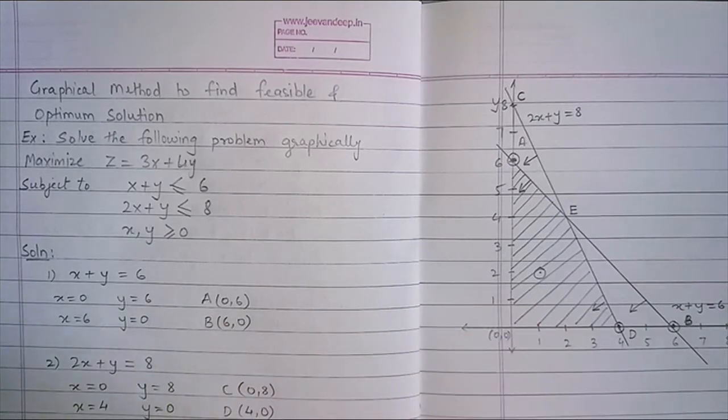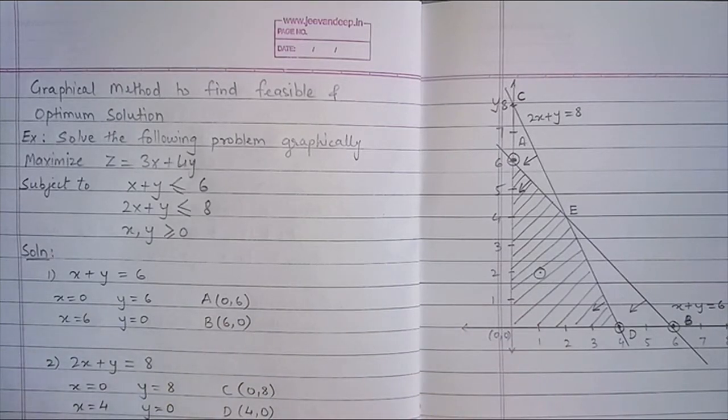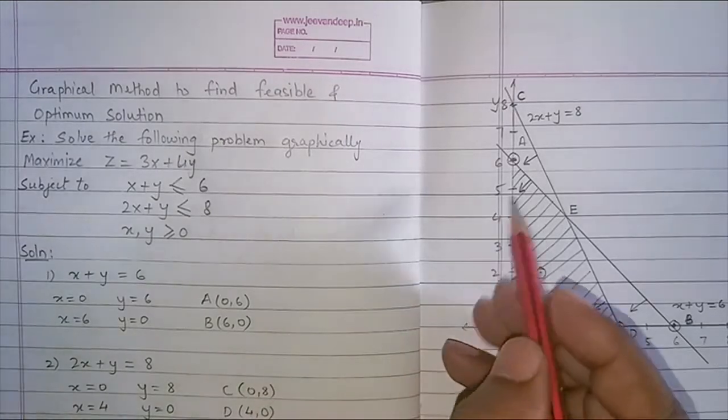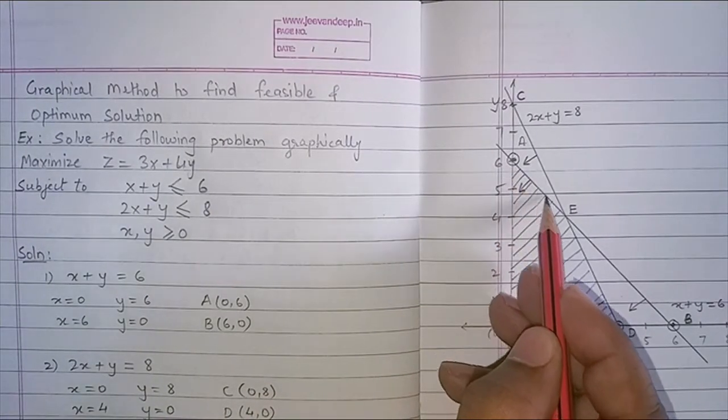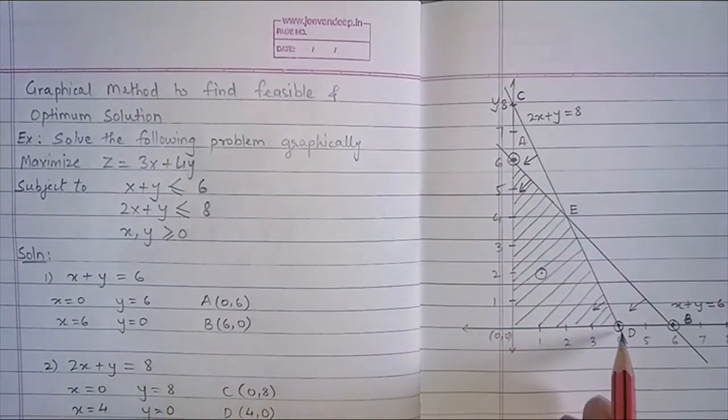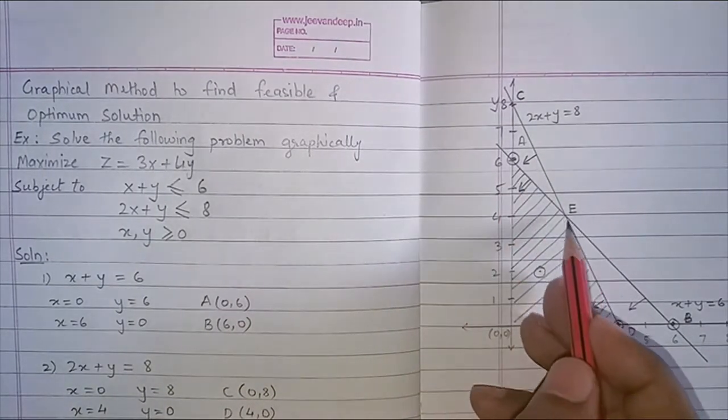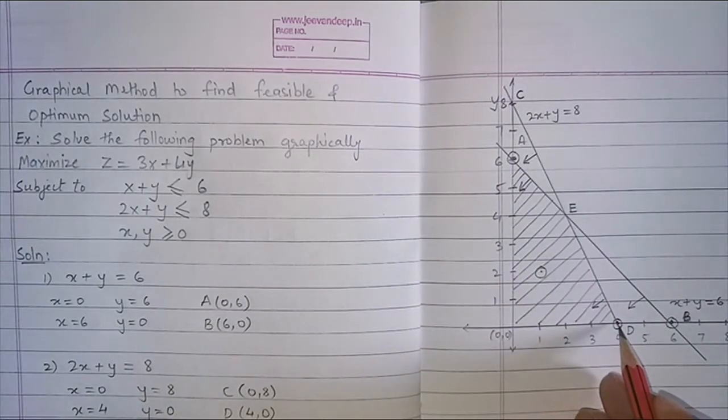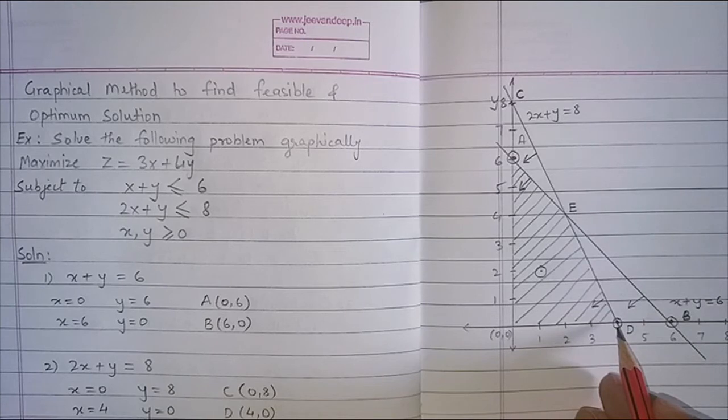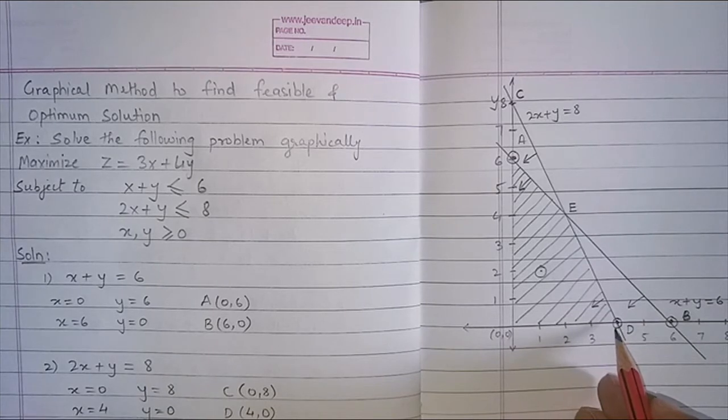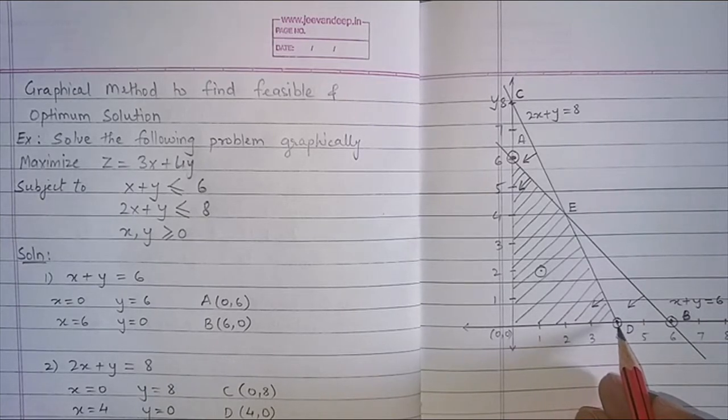If I have maximization problem, the value of X and Y for your maximum value of Z or for your objective function should lie on the edge of this area. This is my edge. And as I have three points already here. So, point A, E and D, I will consider these two points and check whether I have the maximum value.